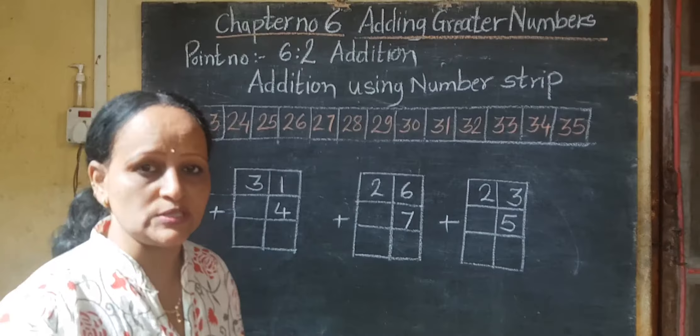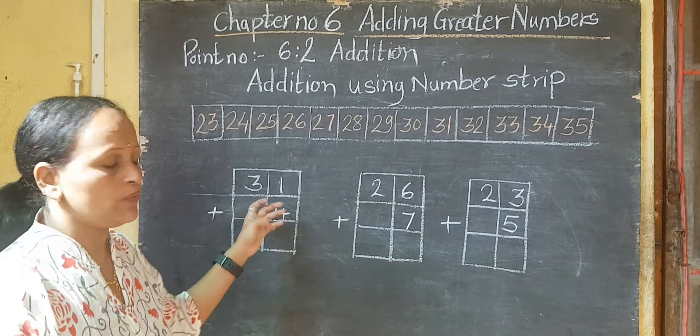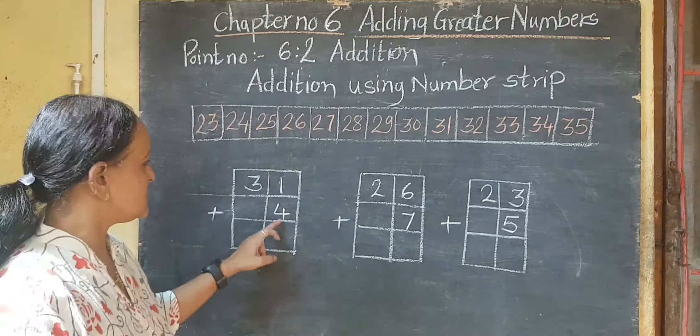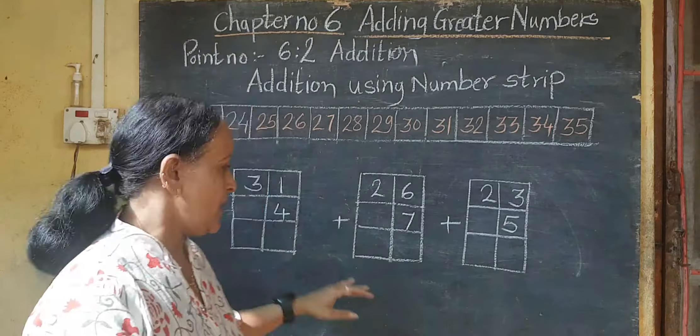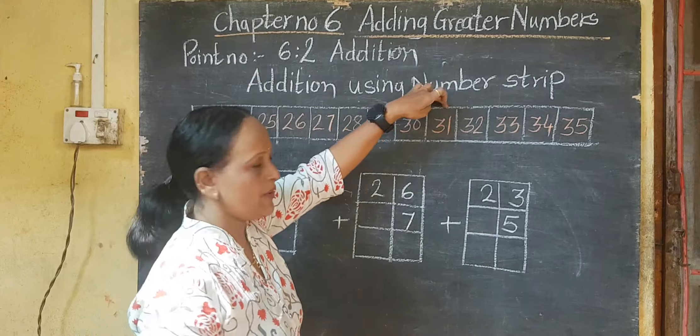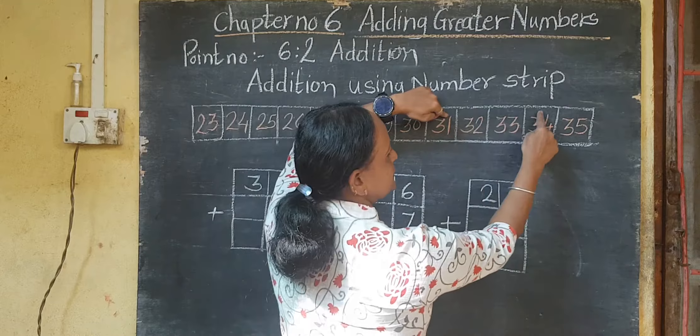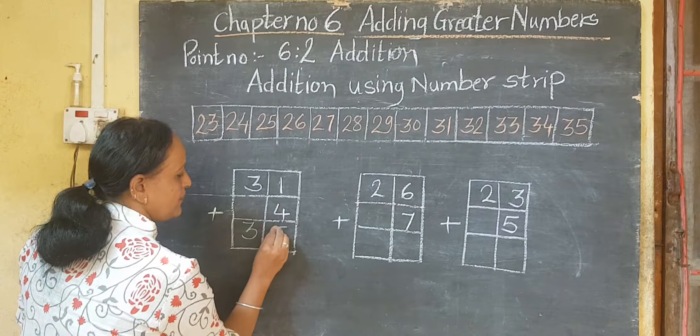Now, the first example — can you see the first number? It's 31. So 31 plus 4: from 31 you have to go forward four steps. Here is 31 on the strip — one, two, three, four. What is your answer? 35. Your answer is 35.